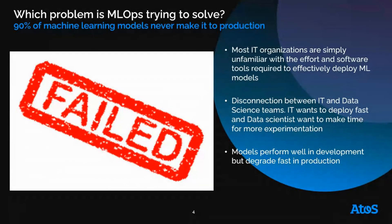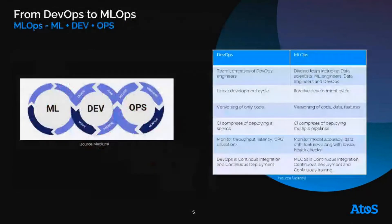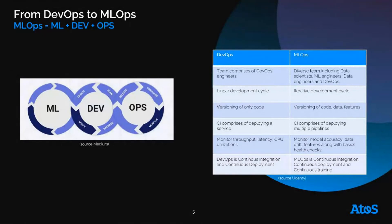The first reason is that too often, business is simply disconnected from the ML world. Secondly, it takes sometimes weeks or months for a data science team to deliver a candidate ML model for production. The third one is that the ML model performs well in the lab but degrades fast in production.